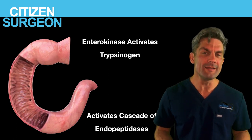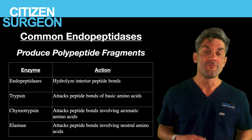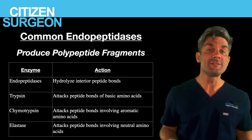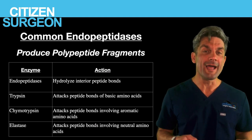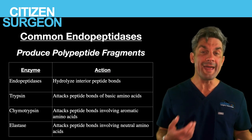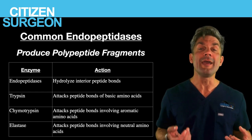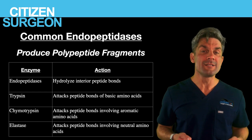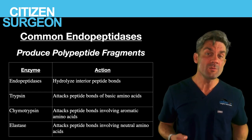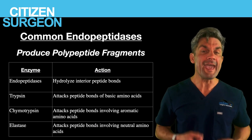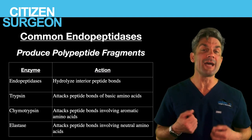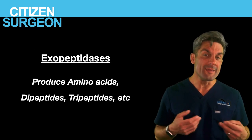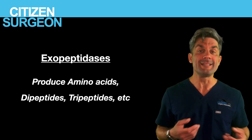Common endopeptidases include: trypsin, which attacks peptide bonds of basic amino acids; chymotrypsin, which hydrolyzes peptide bonds of aromatic amino acids; and elastase, which hydrolyzes peptide bonds of neutral amino acids. Once we have polypeptide fragments, exopeptidases begin digesting proteins from the ends, producing single amino acids as well as di- and tripeptides.